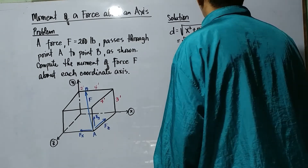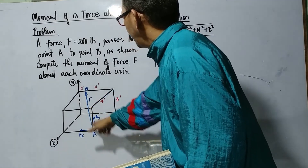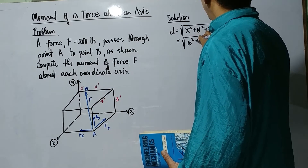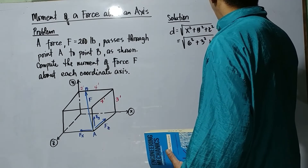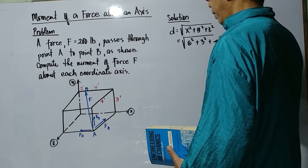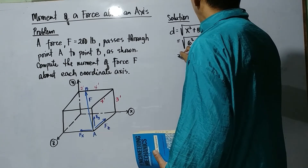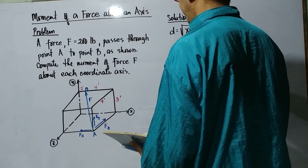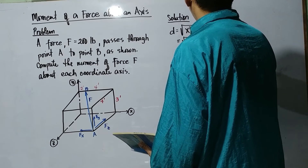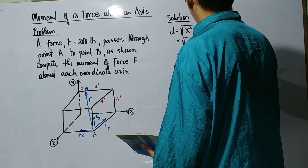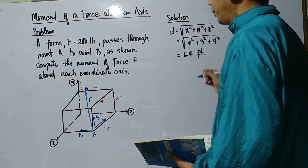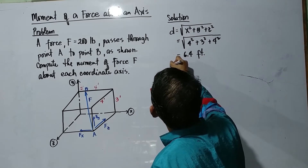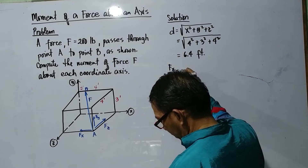So, with respect to the D of this force, we have: what is our X here? X is 6, plus the Y squared — 3 — plus the Z, which is 4. So this gives us D equals... this is 4 — so the computed value for D.